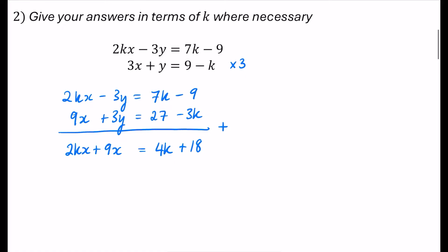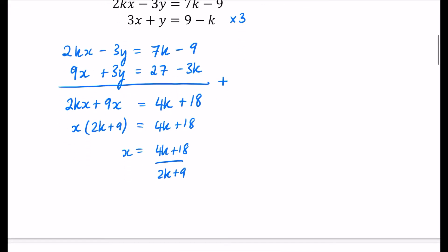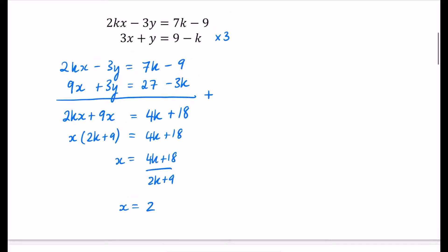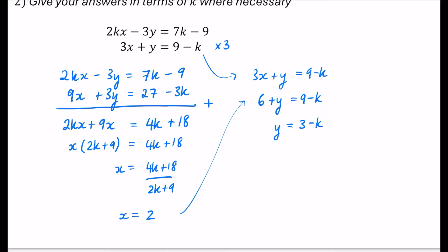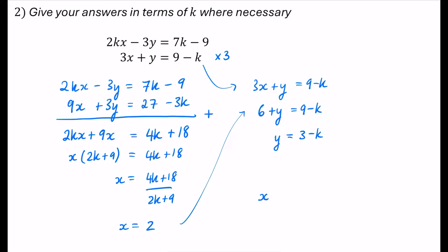Now I need to make x the subject by factorising the left-hand side: x times (2k plus 9) equals 4k plus 18. Dividing both sides by (2k plus 9), the numerator is double the denominator, so this simplifies to x equals 2. That's not the end — I also need to find y. Using the equation 3x plus y equals 9 minus k and substituting x equals 2: 6 plus y equals 9 minus k, so y equals 3 minus k. My final answers are x equals 2 and y equals 3 minus k.